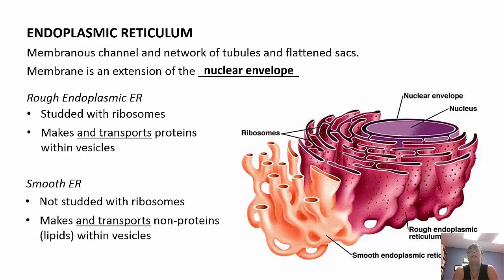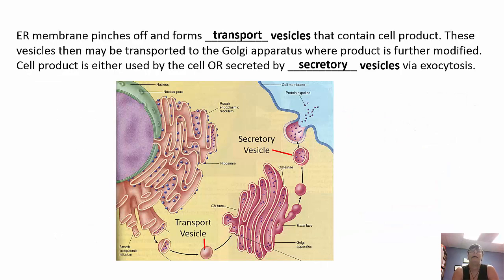The endoplasmic reticulum is an extension of the nuclear envelope — a network of tubules and flattened sacs. The rough ER is studded with ribosomes, giving it a rough appearance, and makes and transports proteins in vesicles. The smooth ER has no ribosomes and makes and transports lipids and hormones. The ER membrane pinches off to form transport vesicles that travel to the Golgi. In exocytosis, secretory vesicles fuse with the plasma membrane and release their product outside the cell.